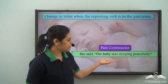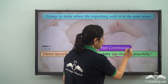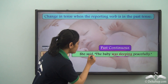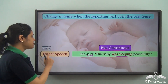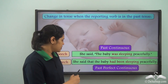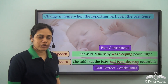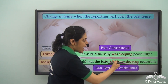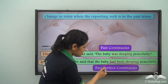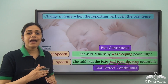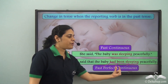Now look at this sentence: She said the baby was sleeping peacefully. 'Was sleeping' is past continuous and the reporting verb is in the past tense. So past continuous becomes past perfect continuous. She said the baby had been sleeping peacefully. So 'was sleeping' becomes 'had been sleeping' — past perfect continuous.